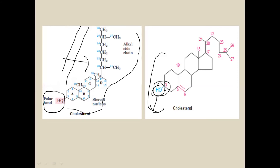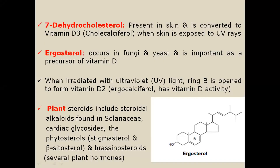The steroid nucleus is visible with a side chain attached to carbon 17, which is the side chain present in cholesterol. Another important type of steroid is 7-dehydrocholesterol, which is present in the skin and is converted into vitamin D3, also called calciferol.